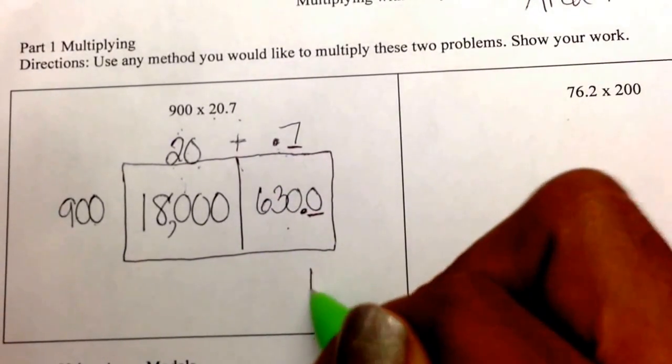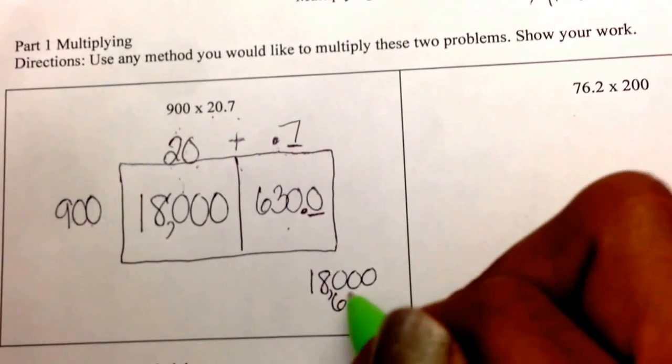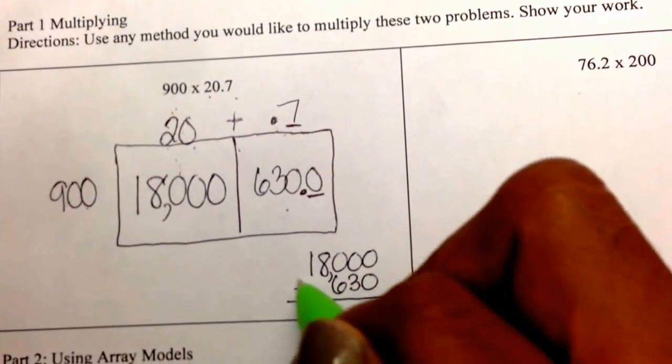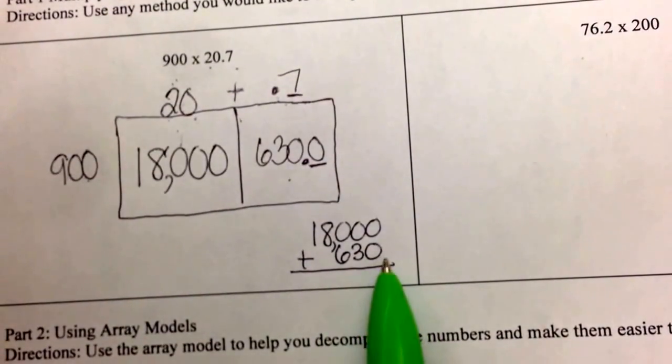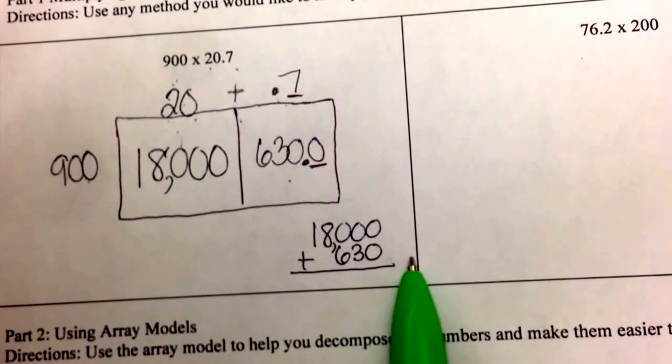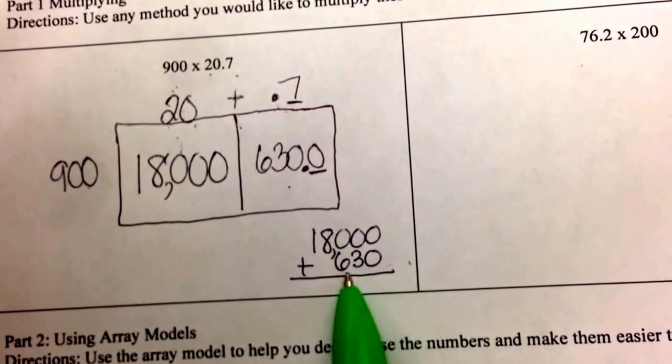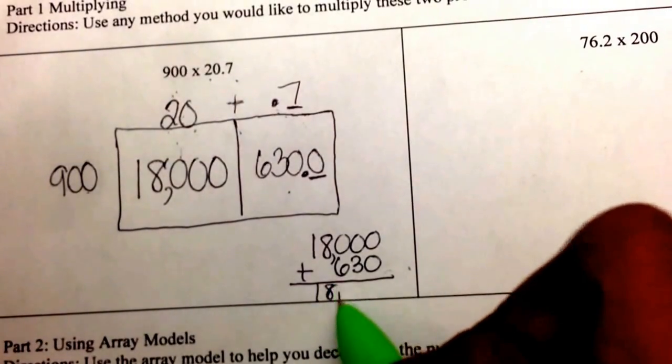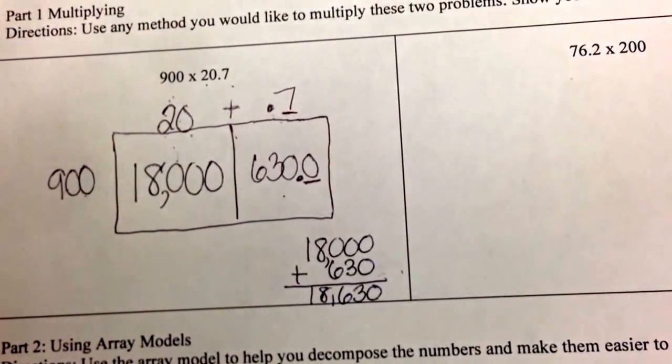Now that's the easy part. I decomposed, so I just add them up together. I'm only going to write 630 without the decimal point because it confuses kids and it's equal to the same amount. And when I add them, I get 18,630.